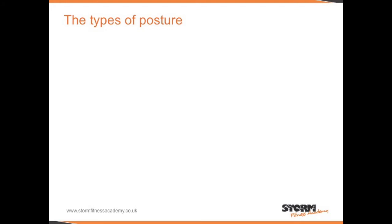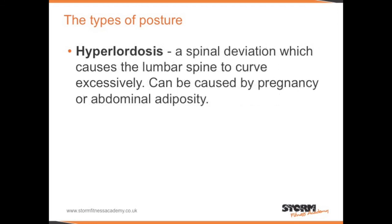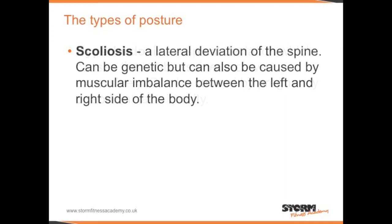There are different types of posture, also known as spinal deviations. Hyperkyphosis is a spinal deviation which causes the thoracic spine to curve excessively, sometimes known as a hunchback. This can be caused by tight chest muscles and weak back muscles, which is very common in office workers. It can also be caused by abdominal adiposity or pregnancy. Scoliosis is a lateral deviation of the spine — it can be genetic, but can also be caused by muscular imbalance between the left and the right side of the body.